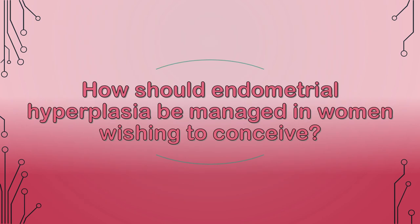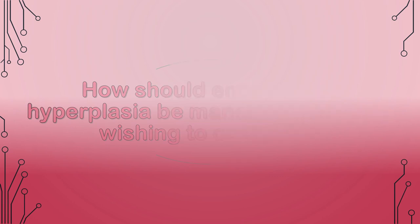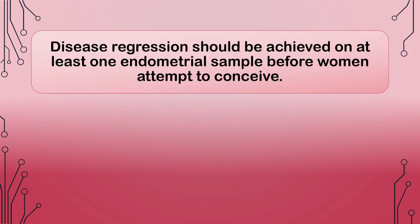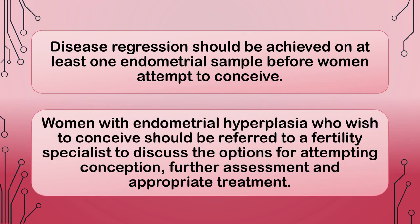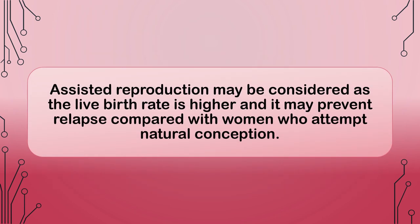How should endometrial hyperplasia be managed in women wishing to conceive? Disease regression should be achieved on at least one endometrial sample before women attempt to conceive. Women with endometrial hyperplasia who wish to conceive should be referred to a fertility specialist to discuss the options for attempting conception, further assessment, and appropriate treatment. Assisted reproduction may be considered as the live birth rate is higher and it may prevent relapse compared with women who attempt natural conception.